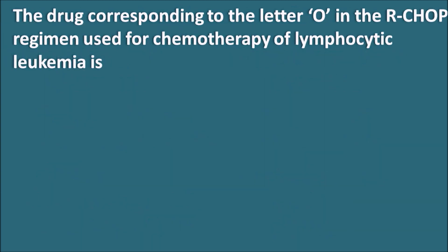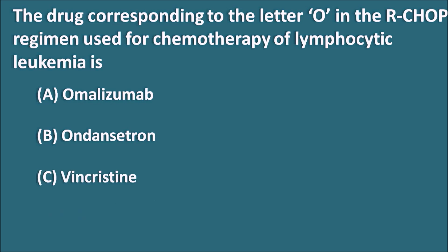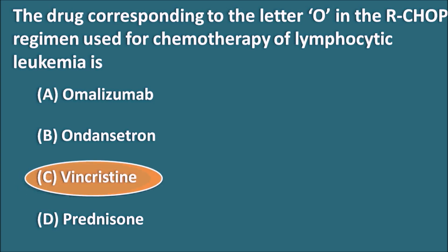Next question: the drug corresponding to the letter O in the R-CHOP regimen used for chemotherapy of lymphocytic leukemia is A — omalizumab, B — ondansetron, C — vincristine, and D — prednisone. In the R-CHOP multi-drug regimen, O indicates vincristine. So C is the answer.